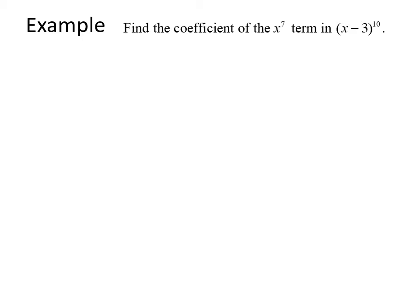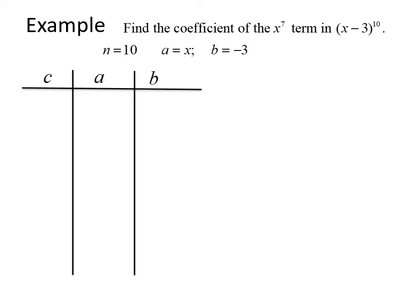For our final example, we want to find the coefficient of the x to the seventh term in the expansion of (x − 3) to the tenth power. We have n equal to 10, a equal to x, and b equal to negative 3. We start by creating a table, but since the problem asks for a specific term, we set it up a little differently. I'm going to look at the a column — starting x at the full power of 10 and reducing it until I reach the x to the seventh term I'm looking for. The coefficients from Pascal's triangle for n equals 10 are 1, 10, 45, and 120 matching down to that position.